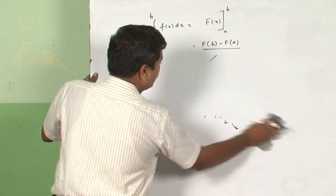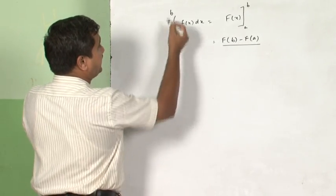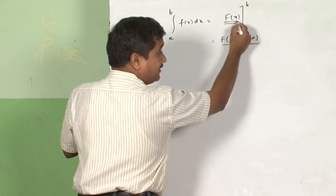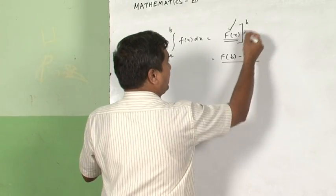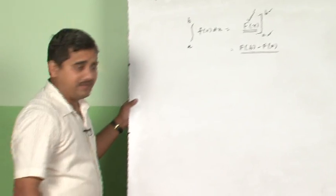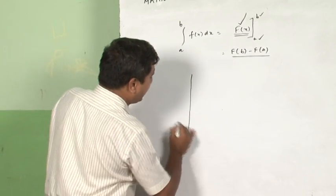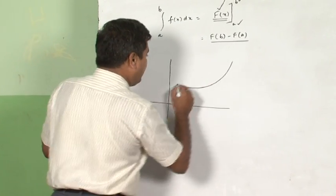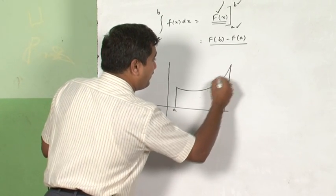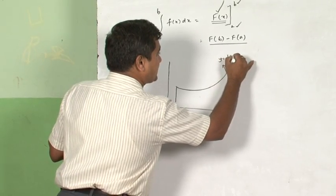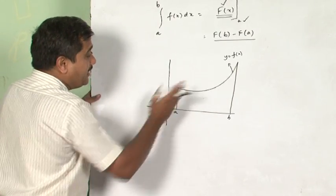Here, what one has to do when the definite integral comes, whenever you take definite integral, after having integrated, the function has to be substituted by the upper limit minus lower limit. Now, what exactly this definite integral geometrically gives us? Geometrically, it indicates that it is the area bounded by the curve y is equal to f of x. This is the y is equal to f of x curve between the ordinates a and b. That is the interval for which the curve is constructed.